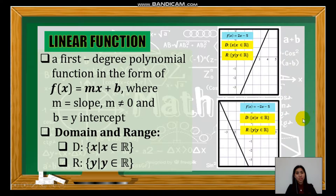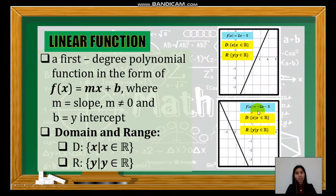Let's have the examples. The first is f(x) = 2x − 5. As you can see, the slope is a positive number, which is 2. That's why the graph is a slanting line that is rising to the right. But if the slope is a negative number, just like the second example, which is negative 2, the graph is a slanting line that is rising to the left. The domain and range are both real numbers, because you can input any value of x and get any real number of y.